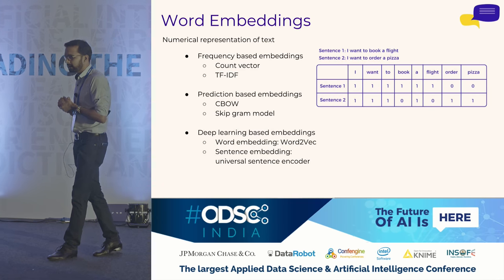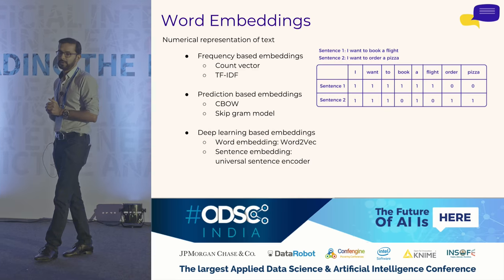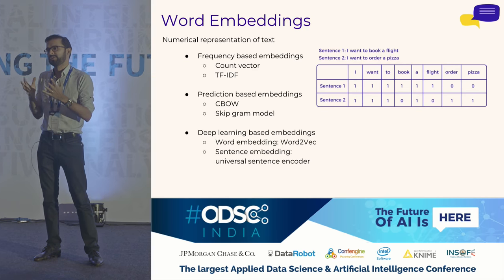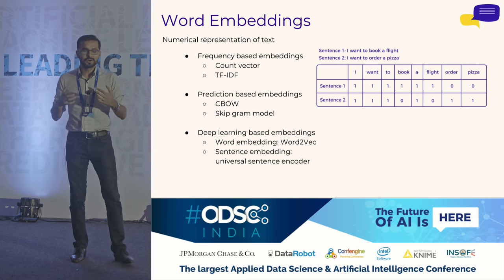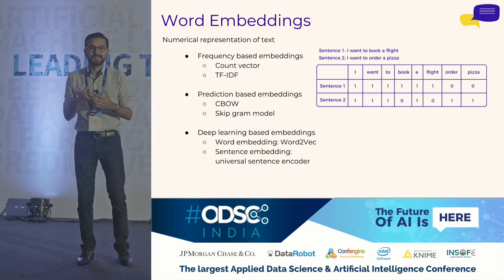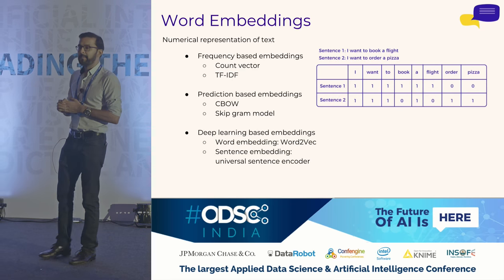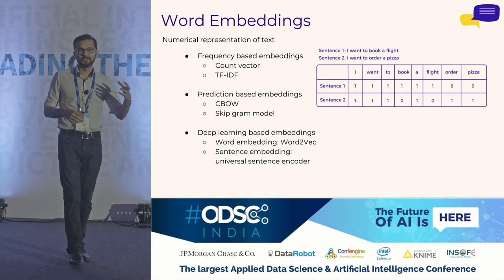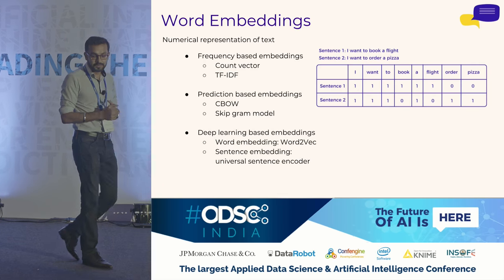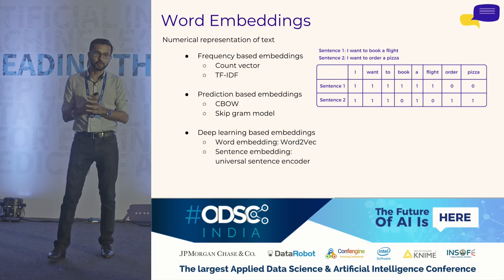Getting a little more technical: the crux of NLP is what we call word embeddings. This basically means a numerical representation of the text coming in. Whenever you're trying to do anything in natural language processing — just like how computers understand binary zero and one — your algorithms need a mathematical representation. The whole point of word embeddings is: how do you take a word, how do you take a sentence, and convert them into a mathematical representation that your algorithms can understand? There are multiple different ways to do this.